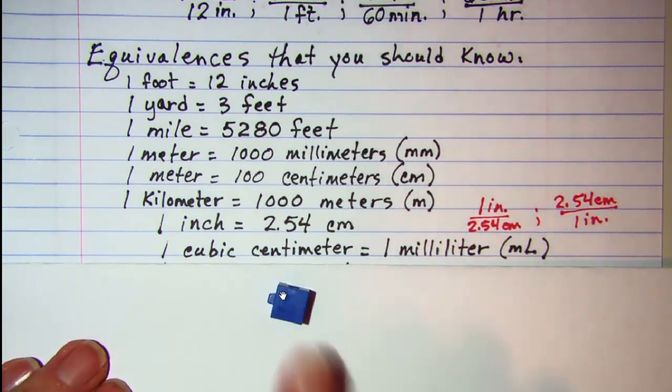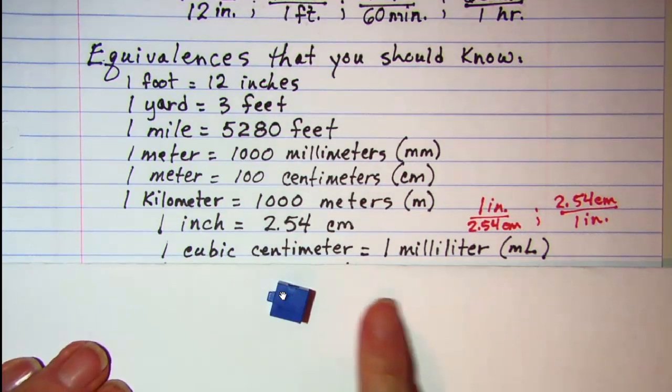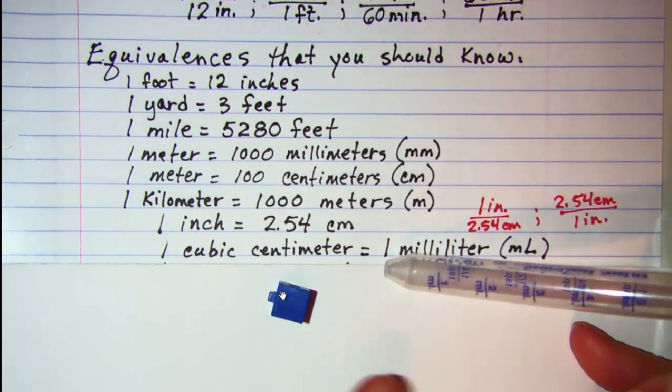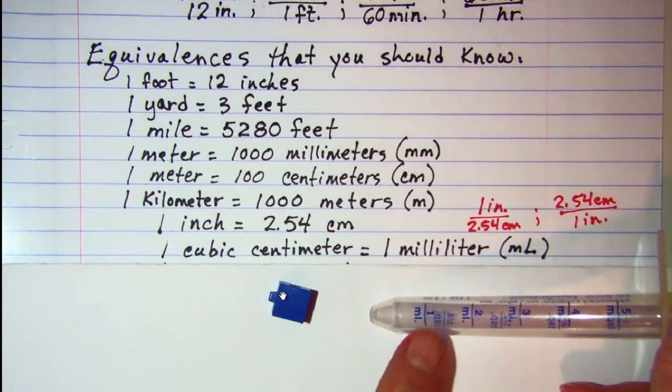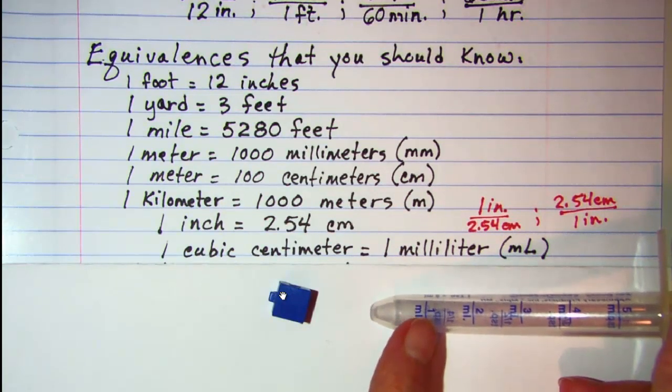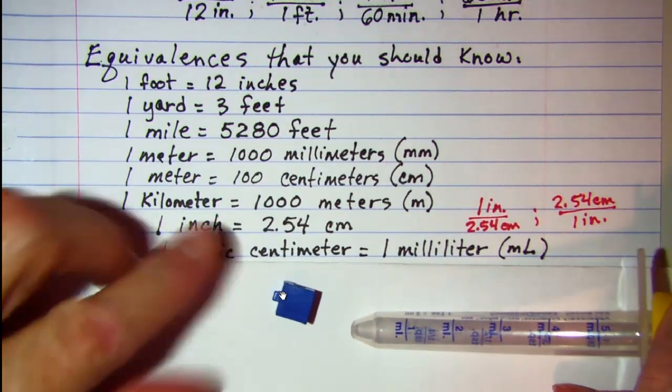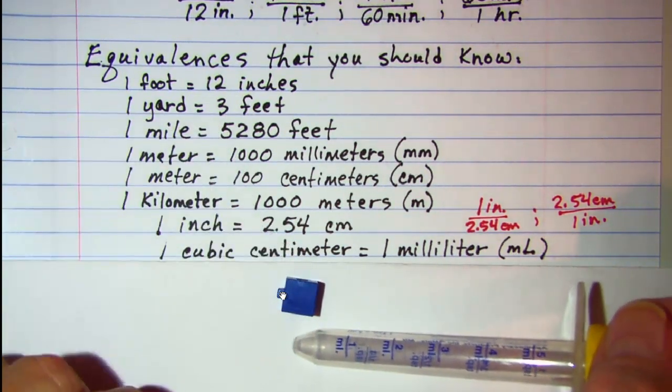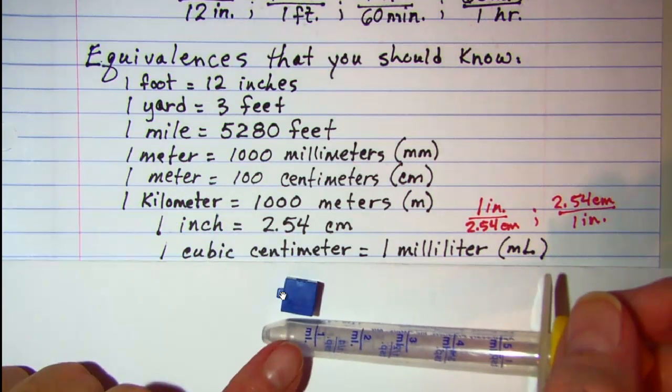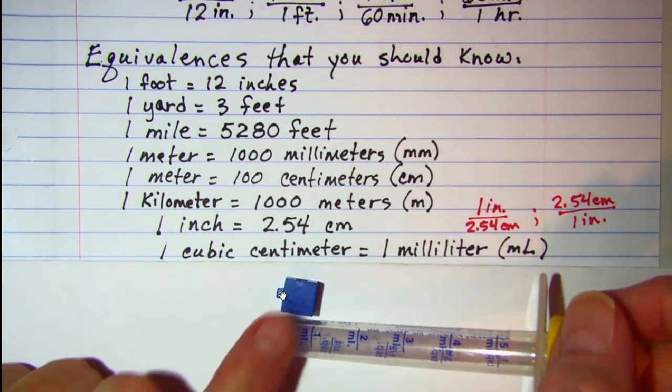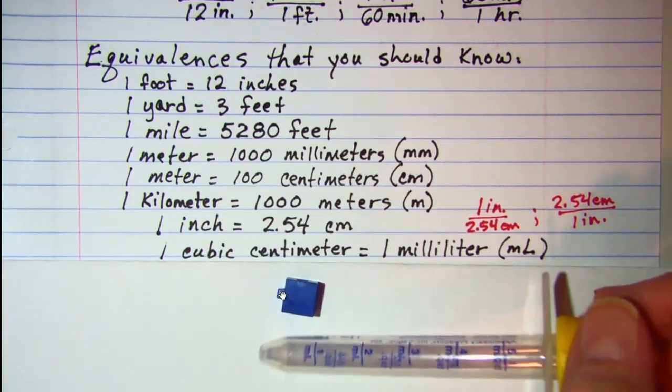And you can see how big it is, about the end of your little finger. And this eye dropper, you'll notice this mark right here is the one milliliter mark. So this cubic centimeter is about equivalent to one milliliter.